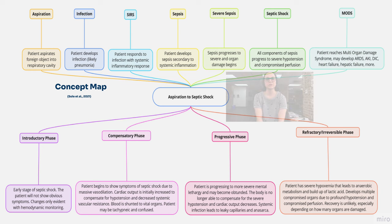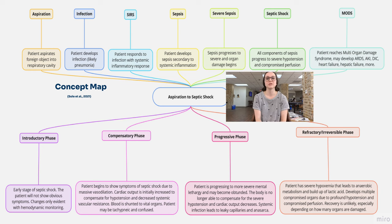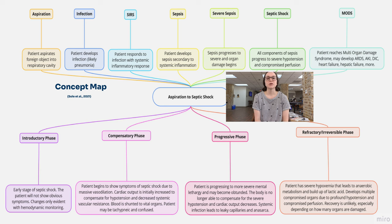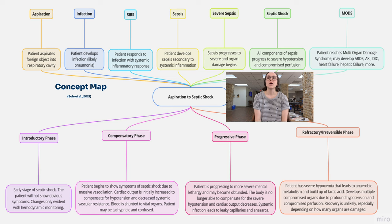Aspiration to septic shock. The beginning phase is that the patient aspirates some kind of foreign object into their respiratory cavity. This progresses to an infection — usually pneumonia. After the infection develops, the patient is going to develop SIRS, which is systemic inflammatory response syndrome. The capillaries get really leaky, edema happens, and this leads to sepsis secondary to the systemic inflammation. This becomes severe sepsis and we start to see a little bit of organ damage.